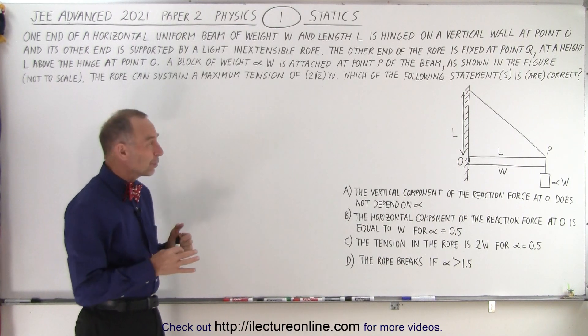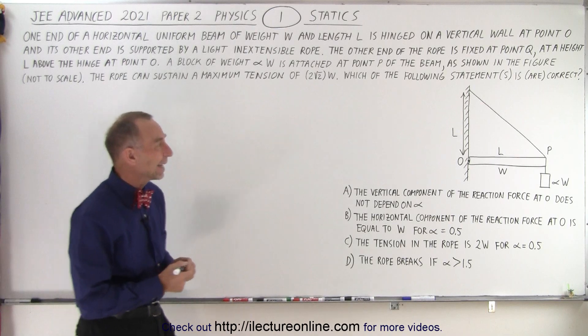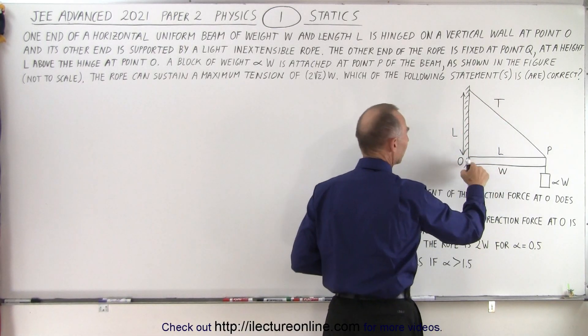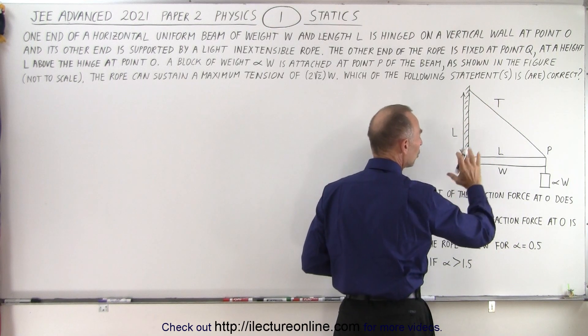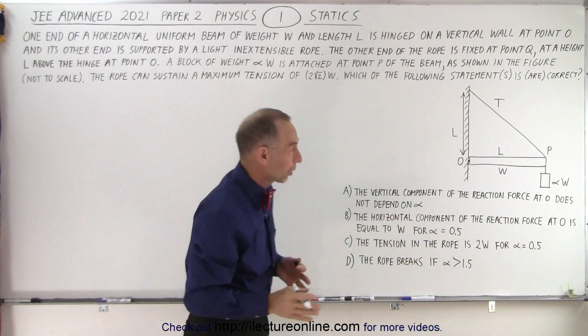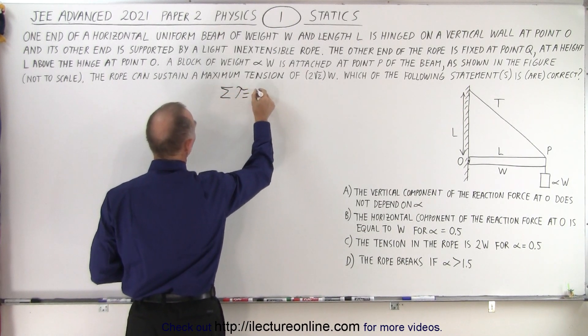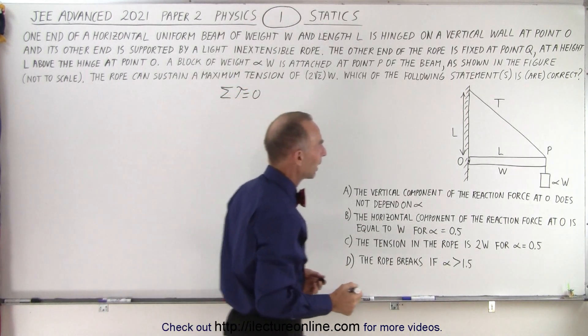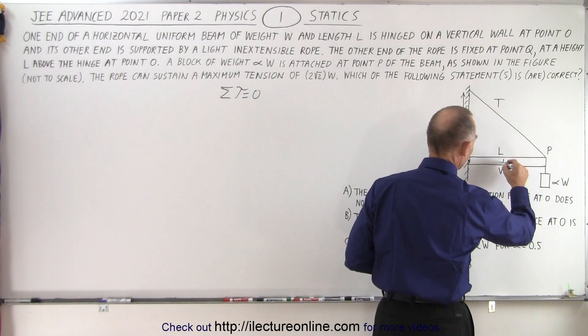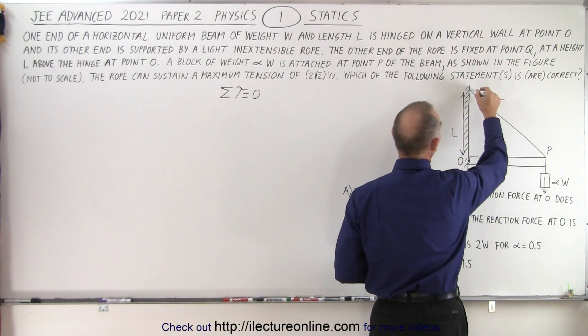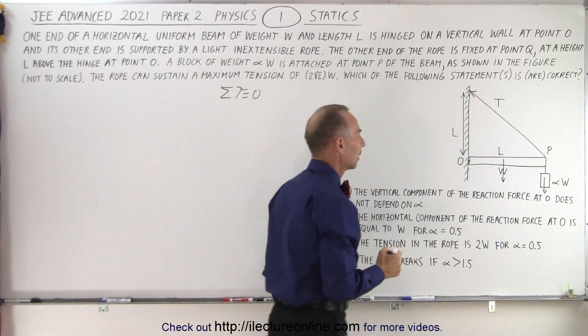I would say that the best thing to do is to calculate the tension in the string. Since it's a statics problem and we have the beam hinged at point O, we can use the sum of all the torques. So we use that principle where the sum of all the torques must add up to zero. How many torques do we have? We have the weight of the beam pulling down this way, we have the weight of the object pulling this way, and we have the tension pulling this way.